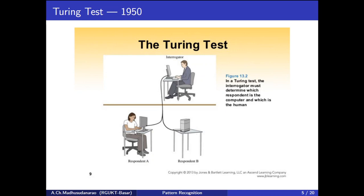Either the human person will reply or the computer will reply — one of them will respond. The test is that the interrogator needs to identify whether the computer is responding or whether the human being is responding. He should try to determine who is answering his questions. If he is able to do that, then that's a failure of the computer.